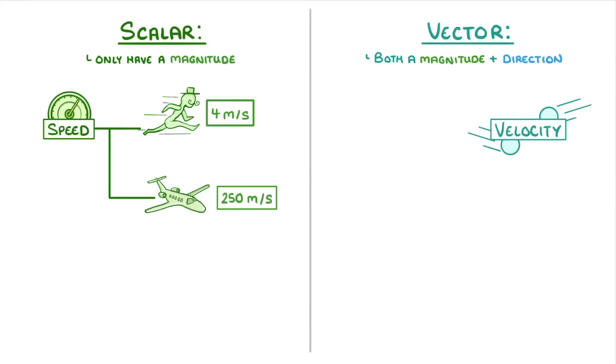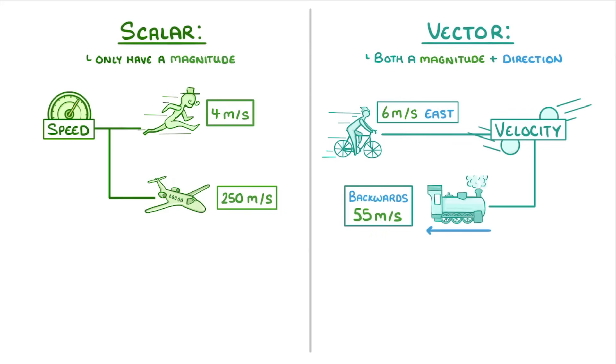Velocity on the other hand is a vector because it also has direction. Like a person cycling 6 meters per second east, or a train travelling backwards at 55 meters per second.